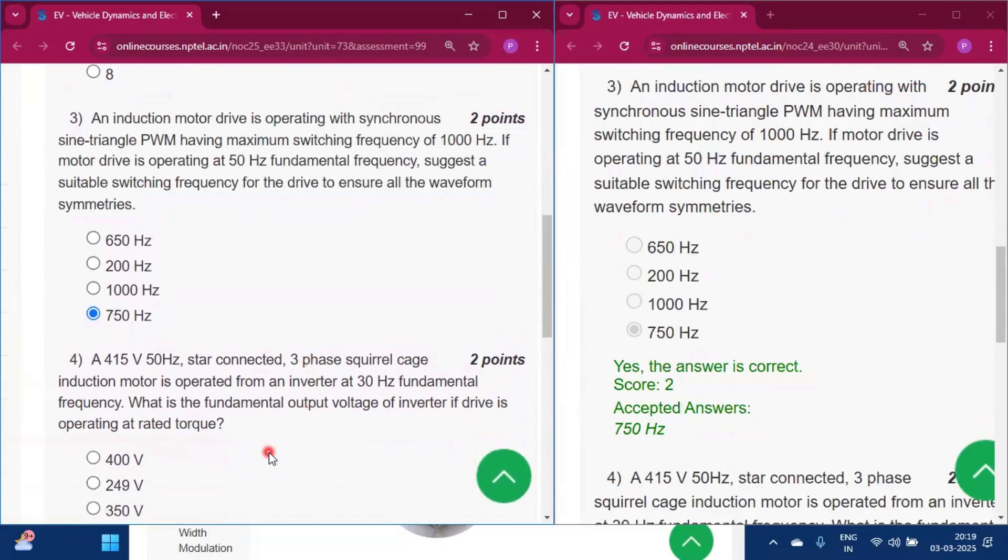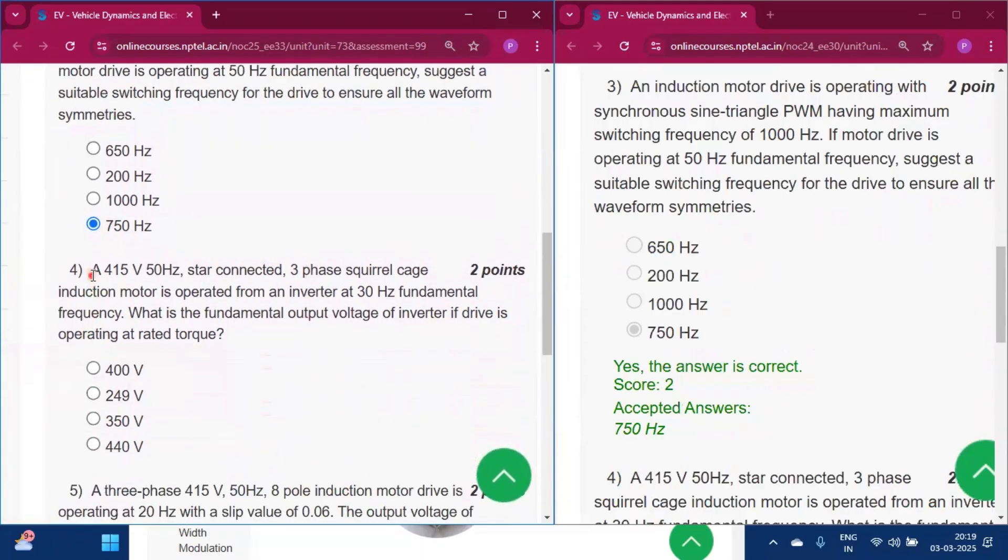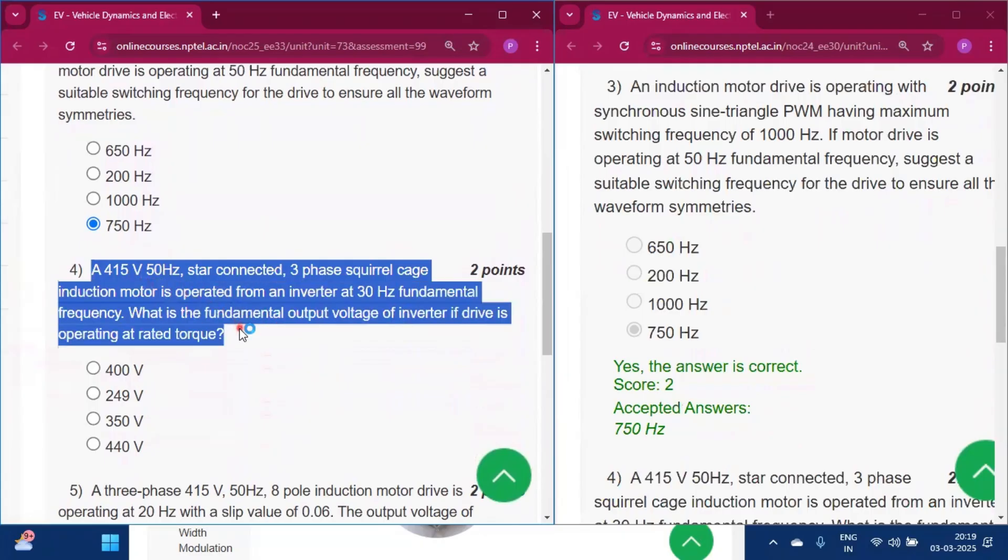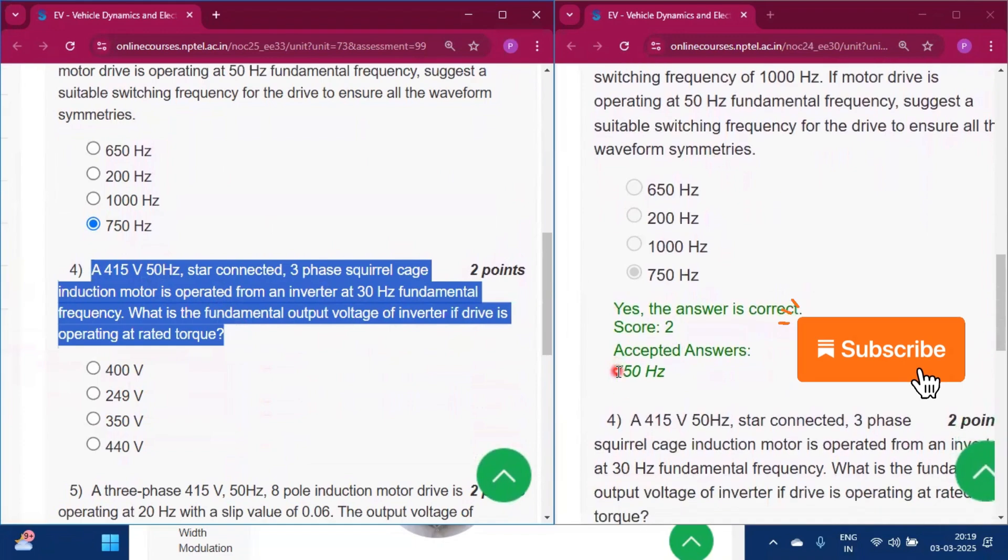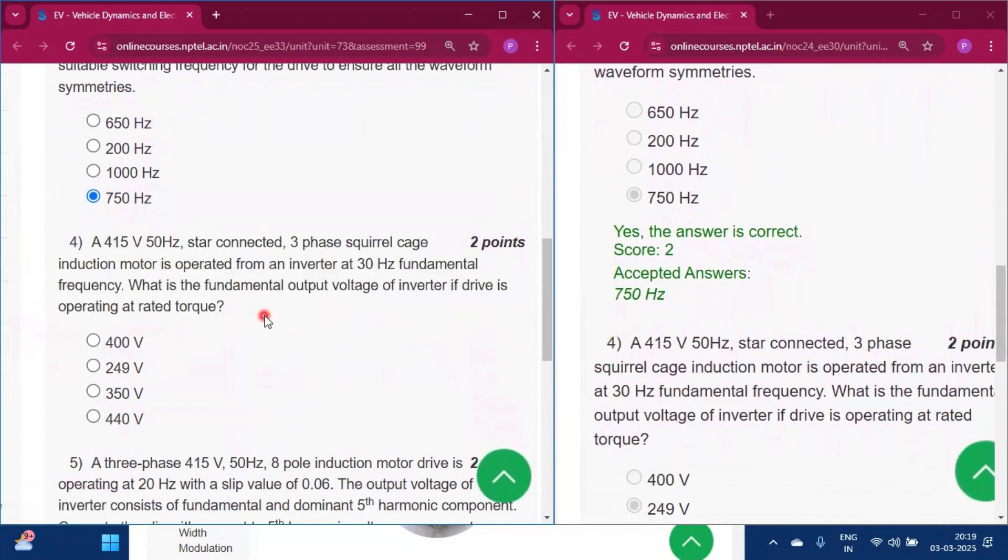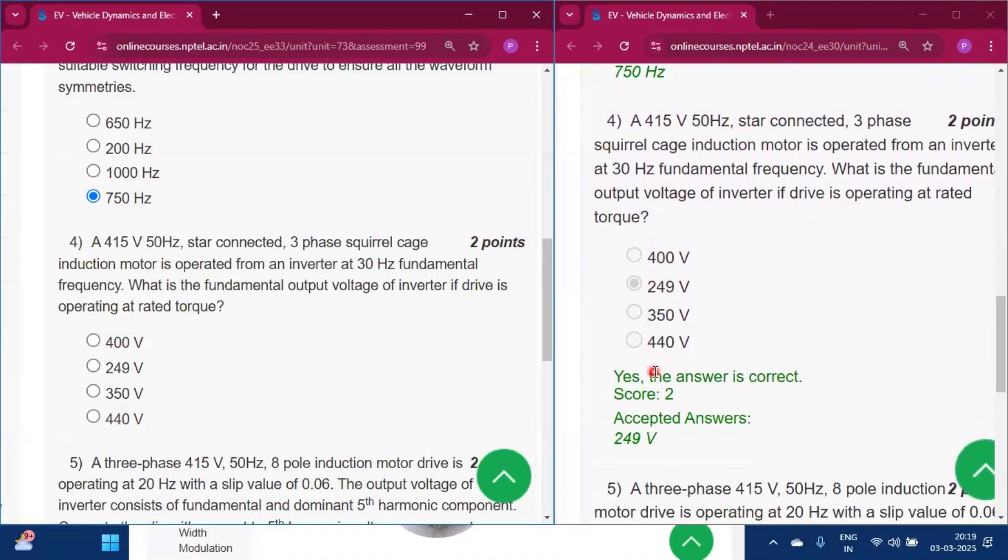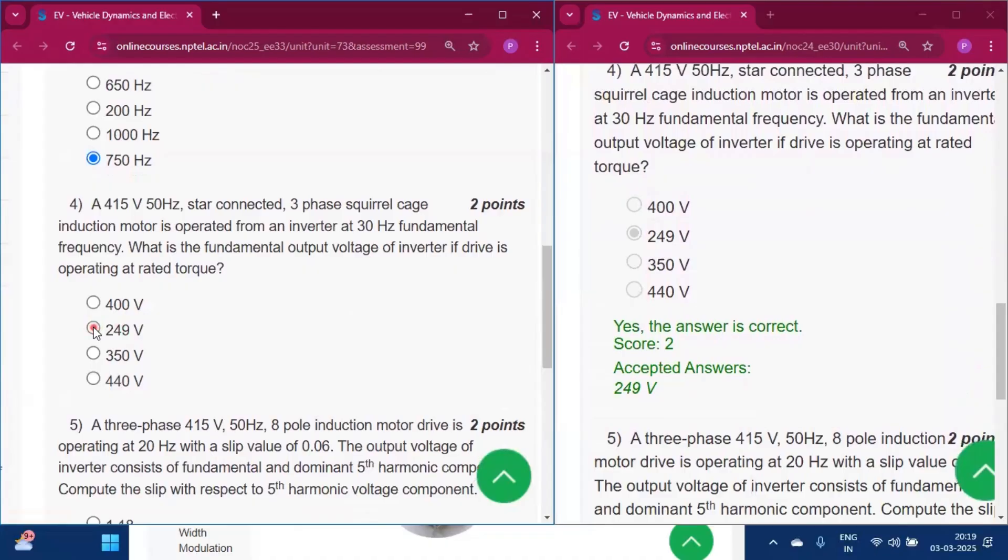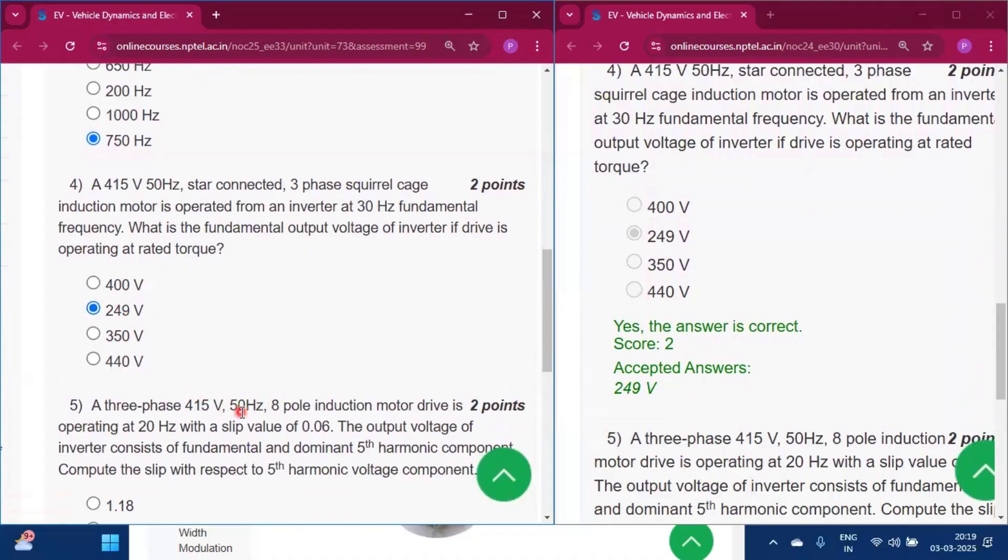Question 4: A 415V, 50Hz, star-connected, 3-phase squirrel cage induction motor is operated from an inverter at 30Hz fundamental frequency. What is the fundamental output voltage of the inverter if the drive is operating at rated torque? The answer is 249V, option B.